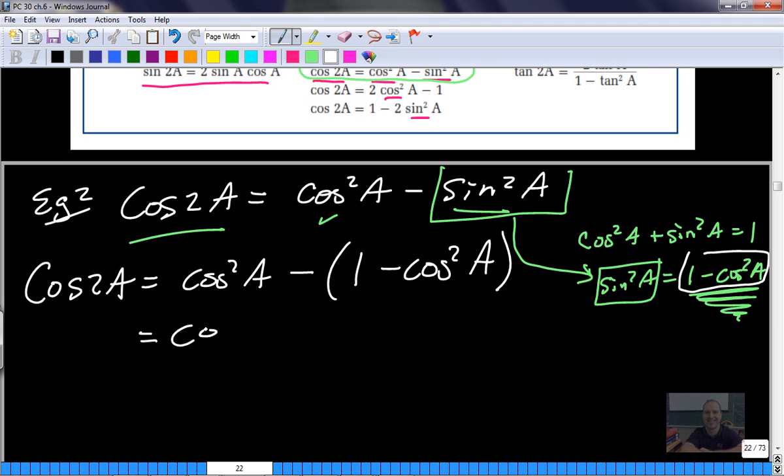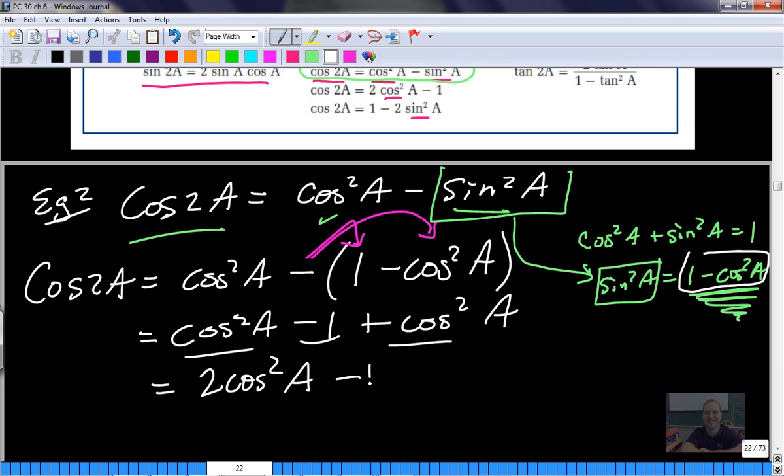And so I have cos squared A minus 1 plus cos squared A when I distribute this negative. And that simplification looks like this. Cos squared plus cos squared is 2 cos squared A and then minus 1.